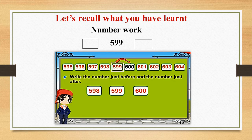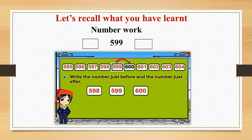Students, you can see on your screen which number — the number given here is 599. So what you have to do is find the number just before and the number just after. Just before 599 will come 598, and after 599 there will be 600. So you will read it: 598, 599 and 600.